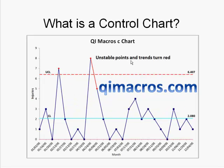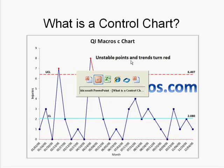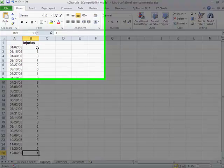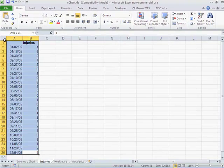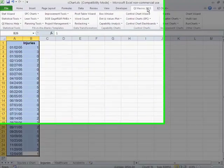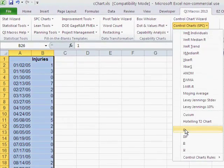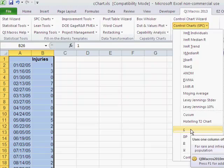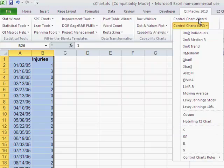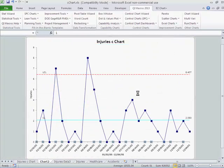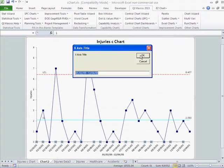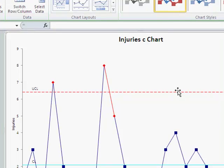So that's what a control chart is. I mean, it's not that hard. And with modern software, like the QI macros, all you need is some data. Here we have injuries. Simply select that data with your mouse, click on the QI macros. In this case we're going to do a C chart. We could have used the control chart wizard to select it, but I'm going to select it automagically here.